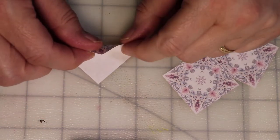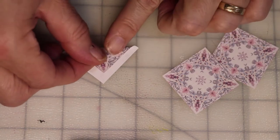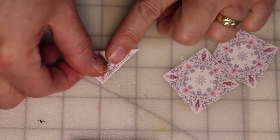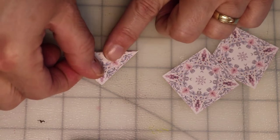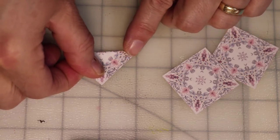Now there's two things that are really important about tea bag folding. One is getting your tiles perfectly square and the other is the folds. You really need to be precise on the folds.